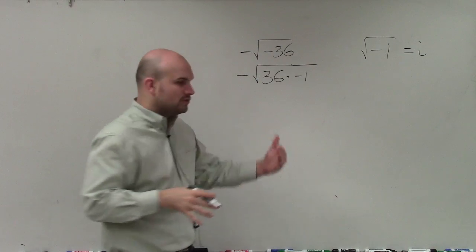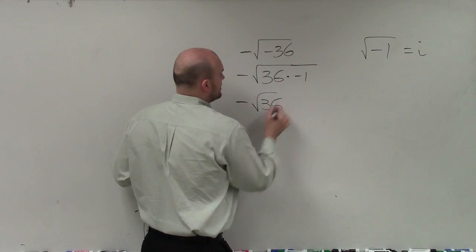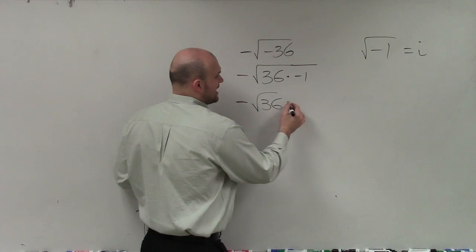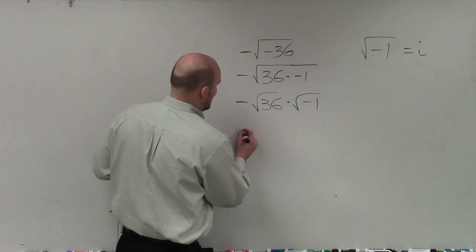Therefore, by using my rules of roots, I can now rewrite this as negative times the square root of 36 times the square root of negative 1, where I can rewrite the square root of negative 1 as i.